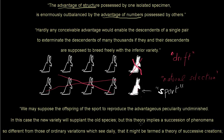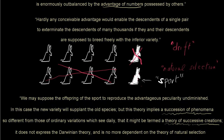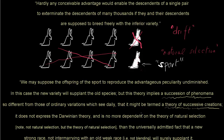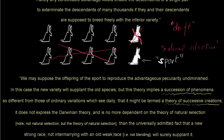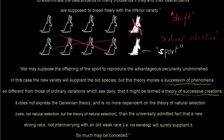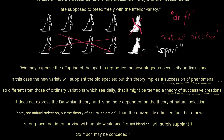But this theory implies a succession of phenomena so different from those of ordinary variations which we see daily, that it might be termed a theory of successive creations. It does not express the Darwinian theory and is no more dependent on the theory of natural selection than the universally admitted fact that a new strong race not intermarrying with an old weak race — that is, reproductively isolated, so not blending — will surely supplant it. Whatever he was doing, it doesn't seem that Jenkin was here conceding anything.